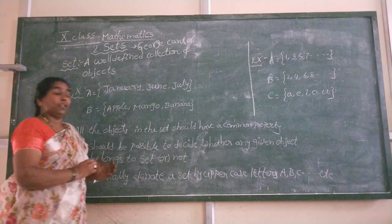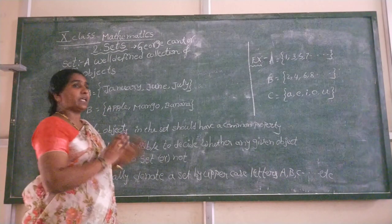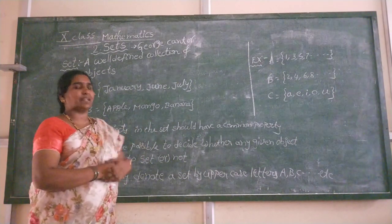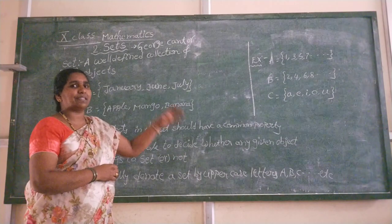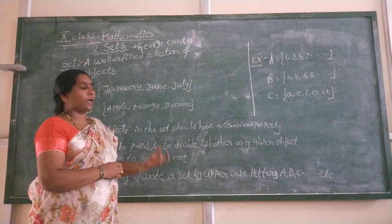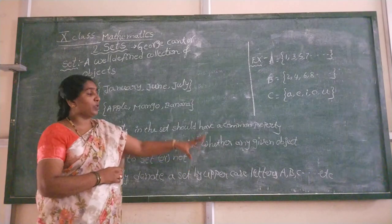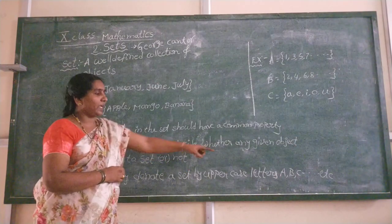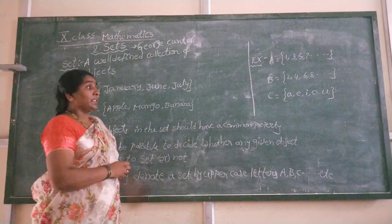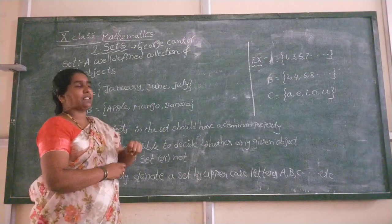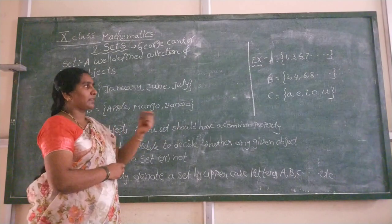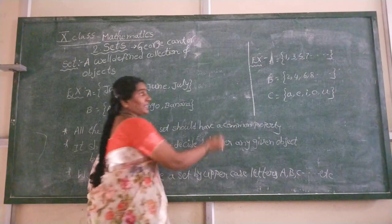We usually denote a set by using uppercase letters — uppercase letters means capital letters. We always denote sets by using capital letters only: capital A, capital B, capital C, and so on. Each and every object in a set we are going to call as an element.